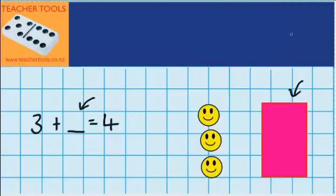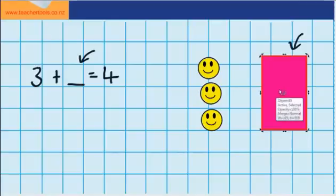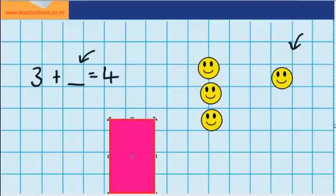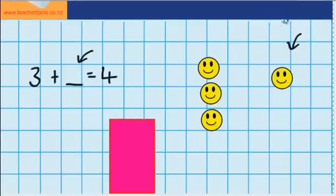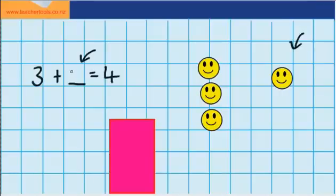Well, let's move the rectangle and see if you were right. And you can see under my rectangle there is one more smiley face. So, 3 plus 1 equals 4.